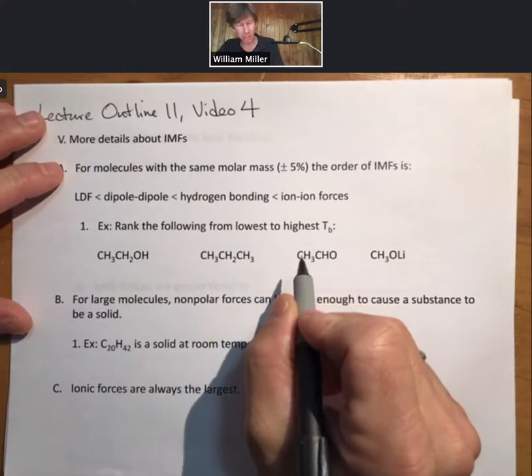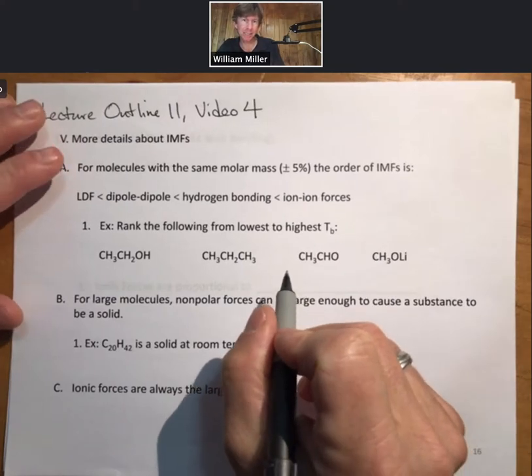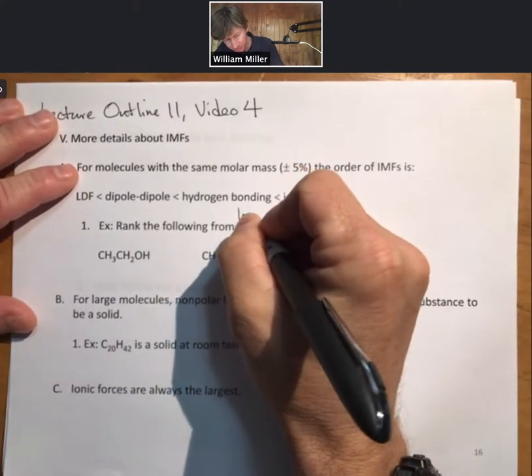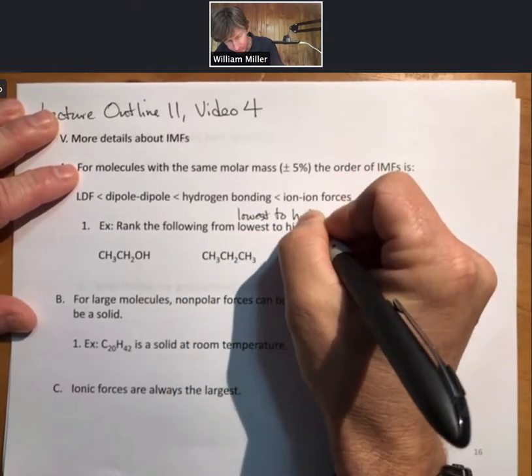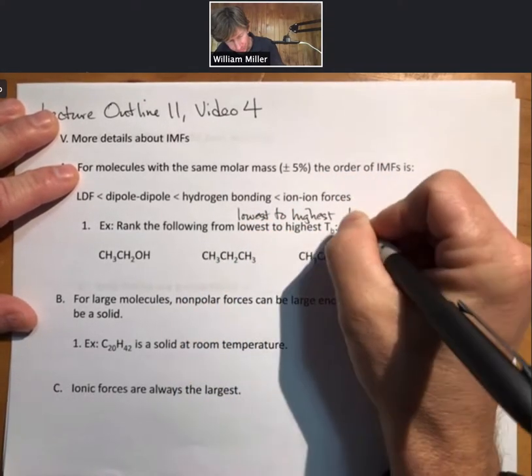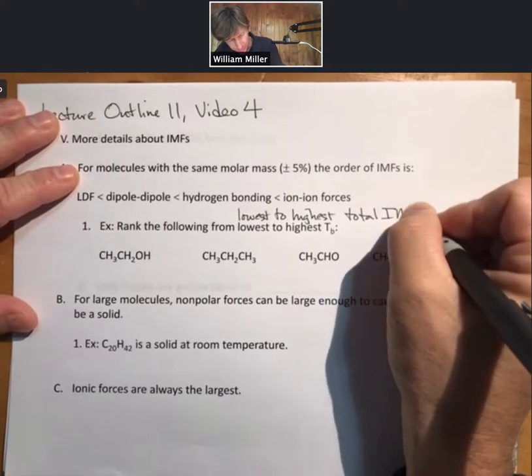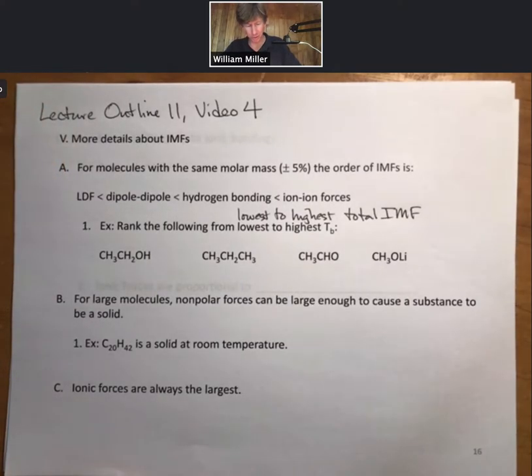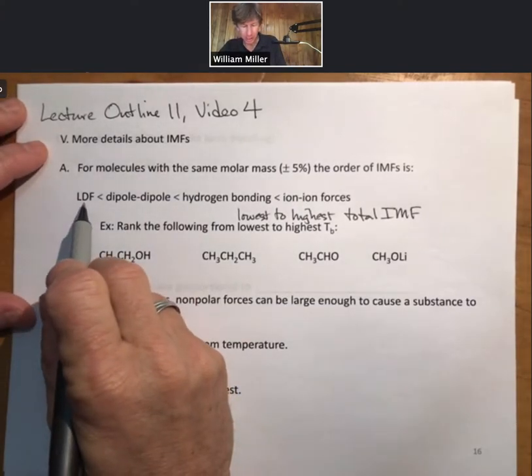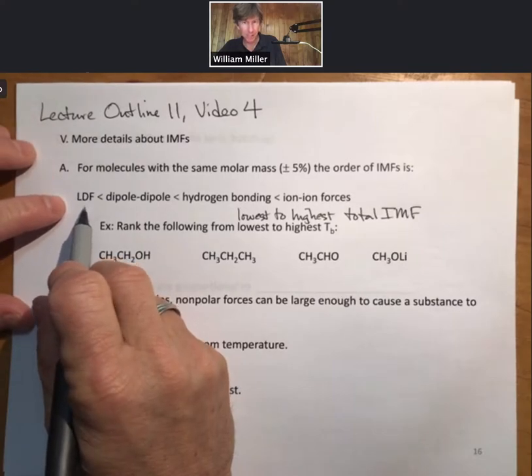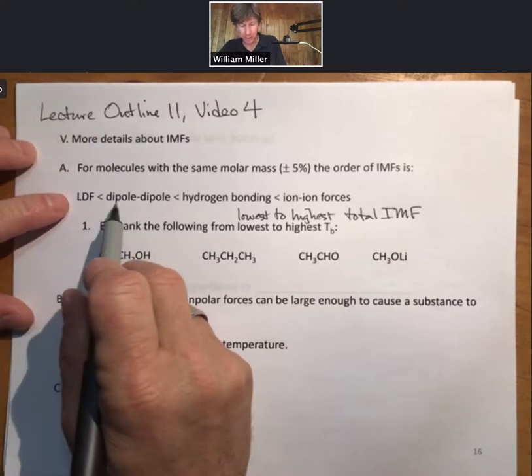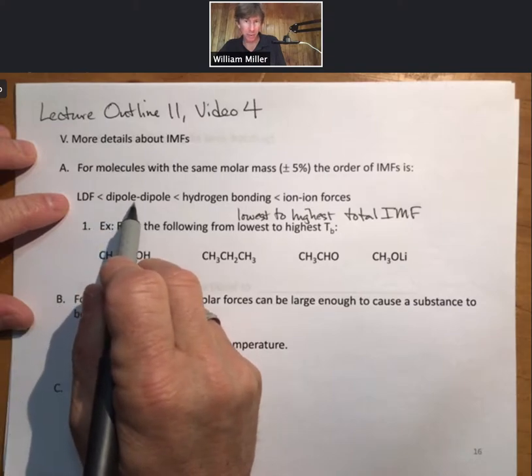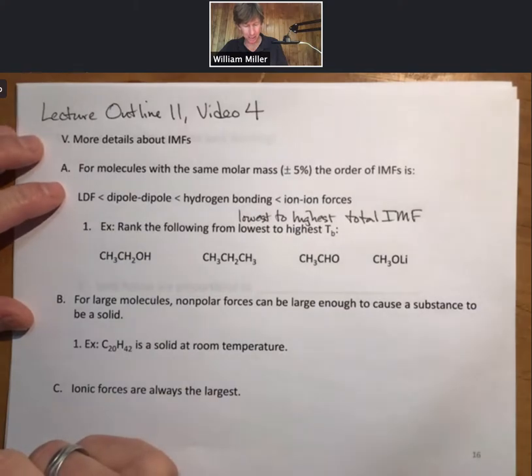Lowest to highest boiling point is lowest to highest total intermolecular forces. To help you do the total IMF, it's always important to remember which one is the dominant or largest intermolecular force. When solving problems, if LDF is the largest one, then it will be less than something that also has dipole-dipole, then hydrogen bonding, then ion-ion forces.